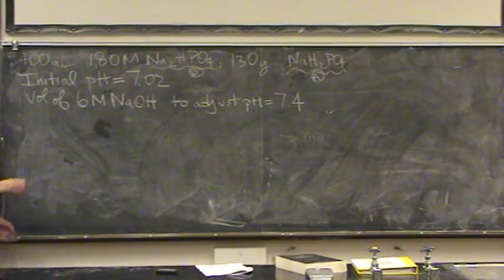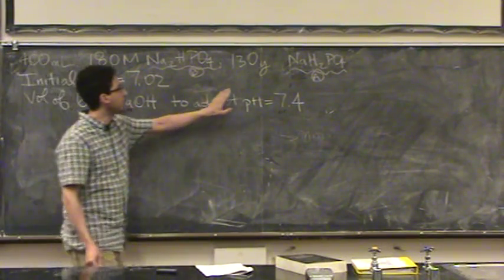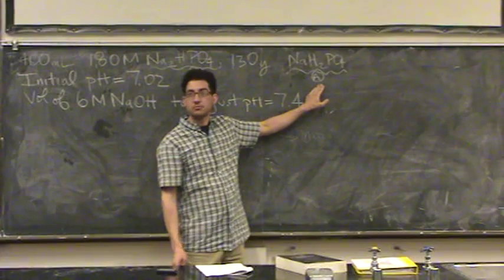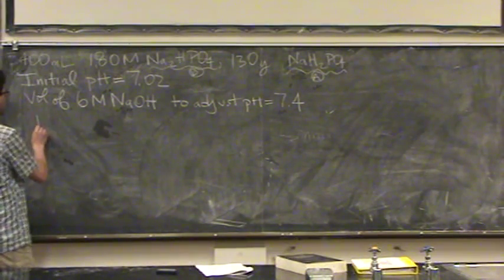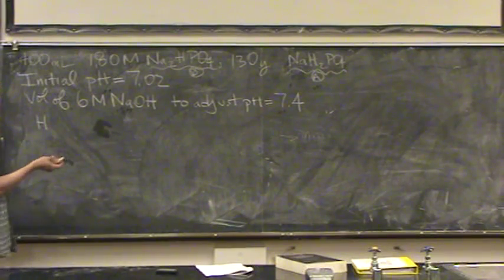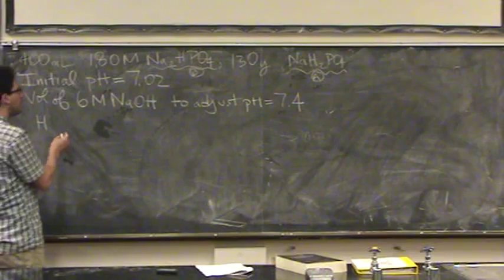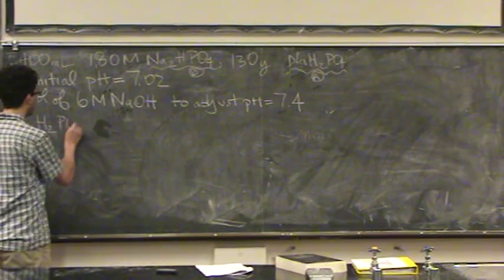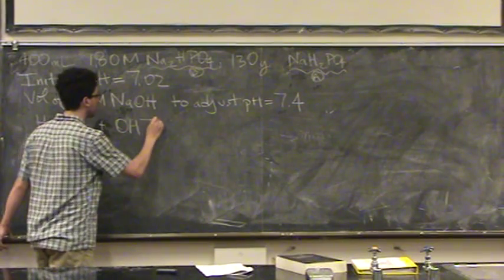So if this is a base, and it's reacting with a buffer, it wants to react with the acid part of the buffer. Let's write the acid part. It's the H, you don't have to write the sodium because it's a spectator ion, you can if you want, it doesn't matter. H2PO4 minus, plus the sodium hydroxide, which is hydroxide.